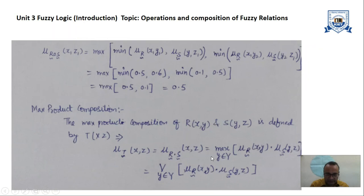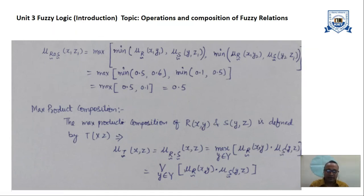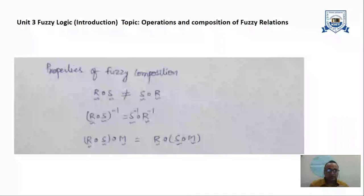For example, to find the value of (X1, Z1) using max-product: X1 is fixed, Z1 is fixed, with two possibilities Y1 and Y2. We compute max of [mu(X1,Y1) × mu(Y1,Z1), mu(X1,Y2) × mu(Y2,Z1)]. After getting the products of these membership values, we take the one which is the maximum value. This is the max-product composition, as opposed to the max-min composition.